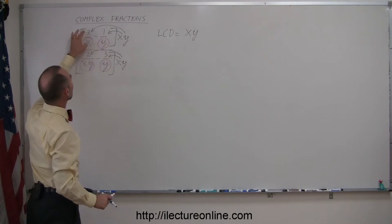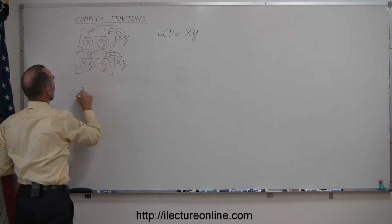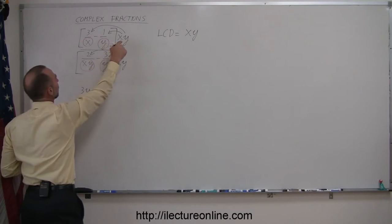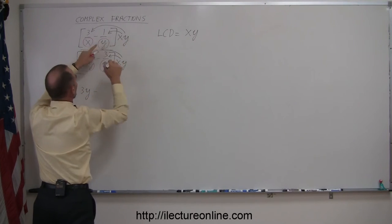When I multiply x times y times 3 over x, the x's will cancel out, and I'm left with 3y. Minus, when I multiply this times this, the y's will cancel out, and I'm left with 1 times x, or x.